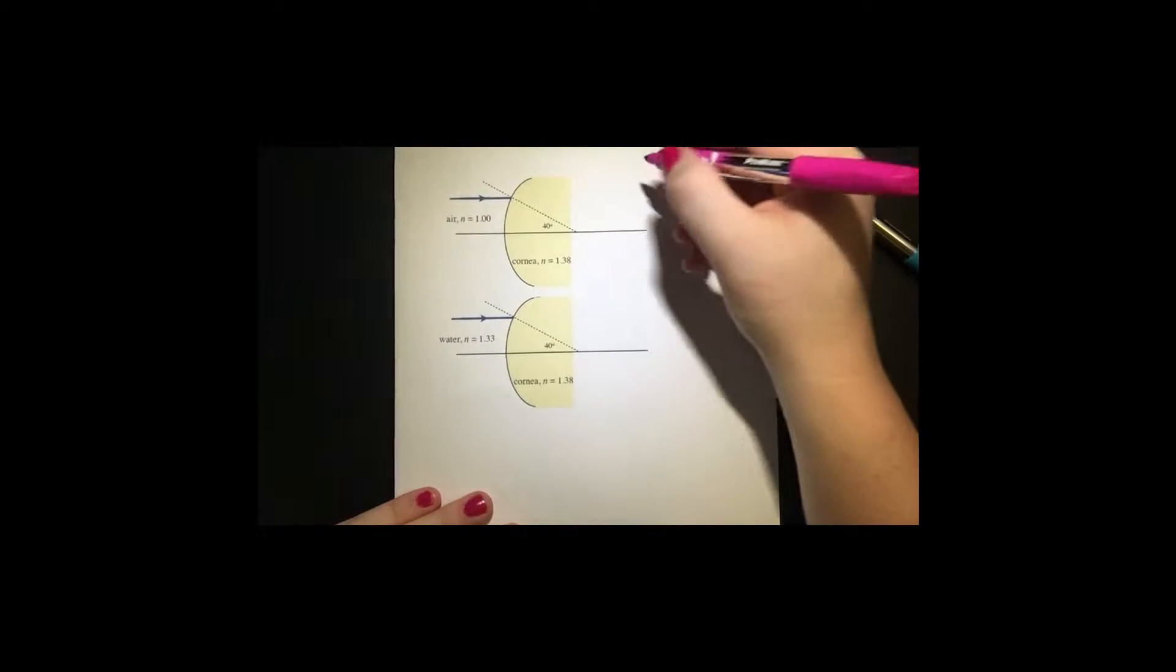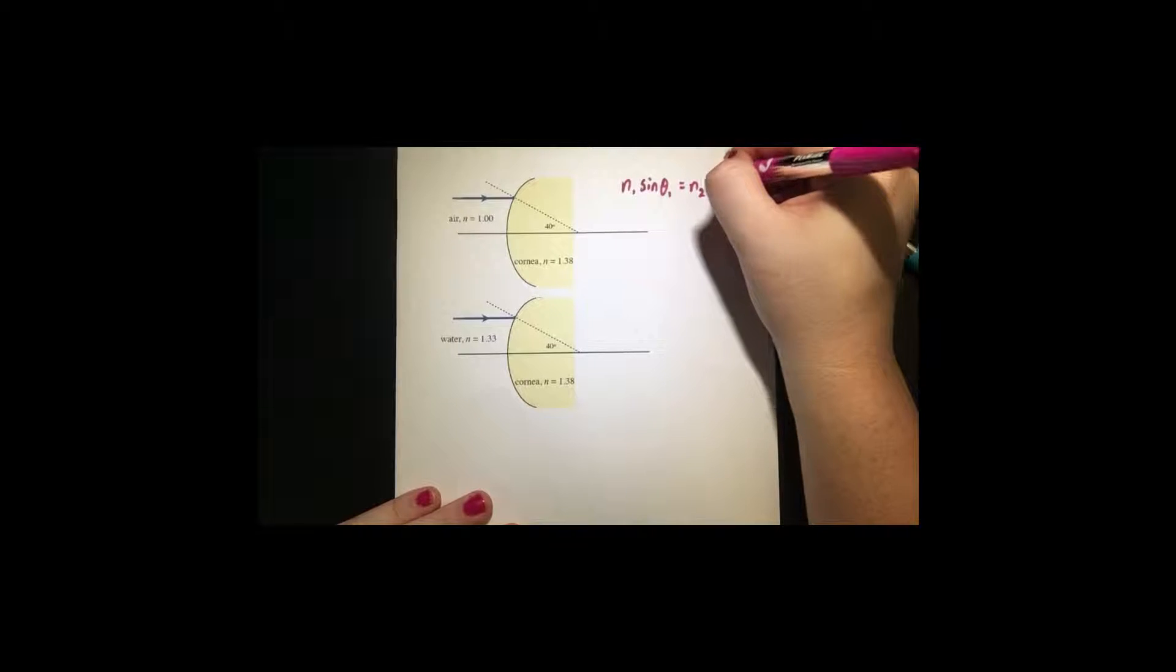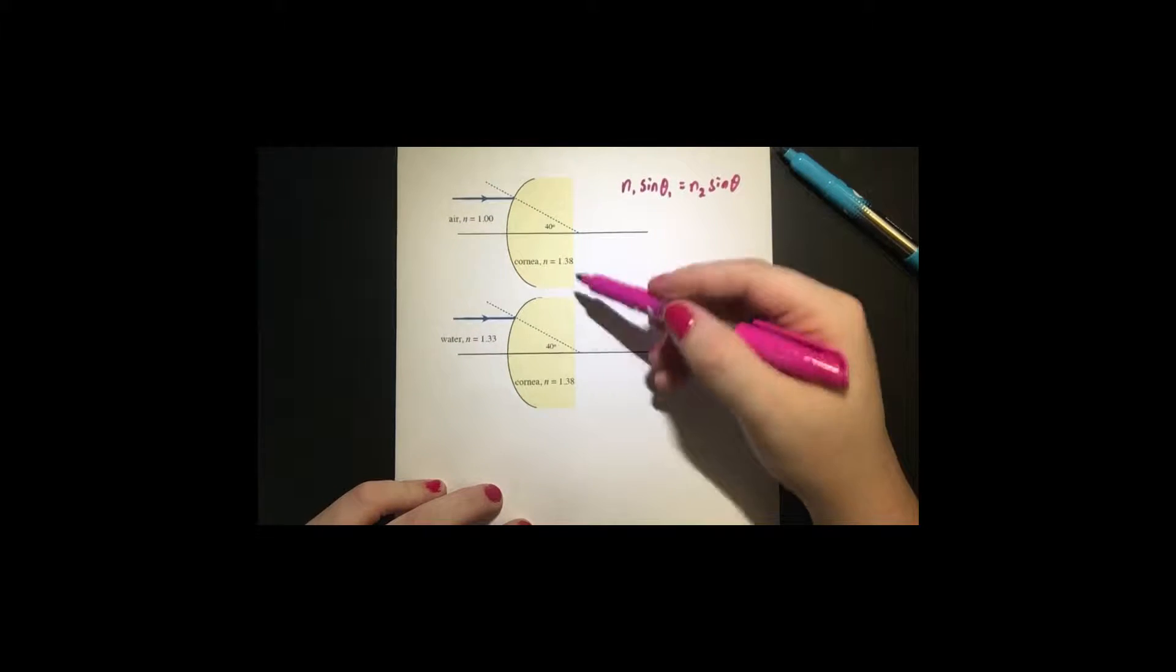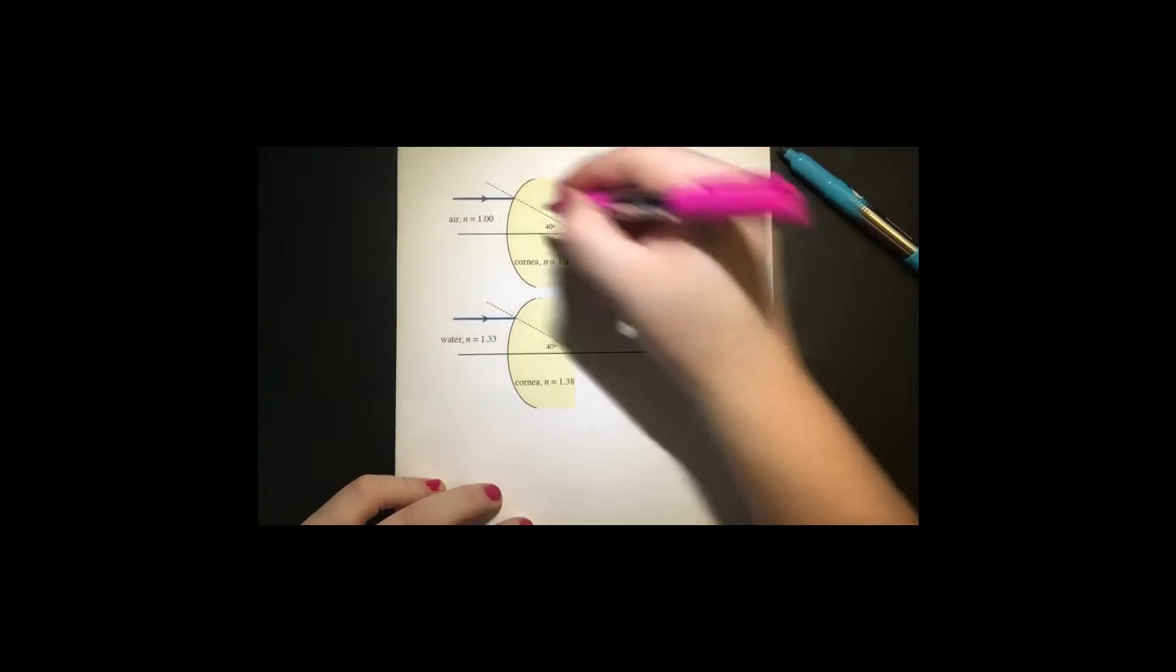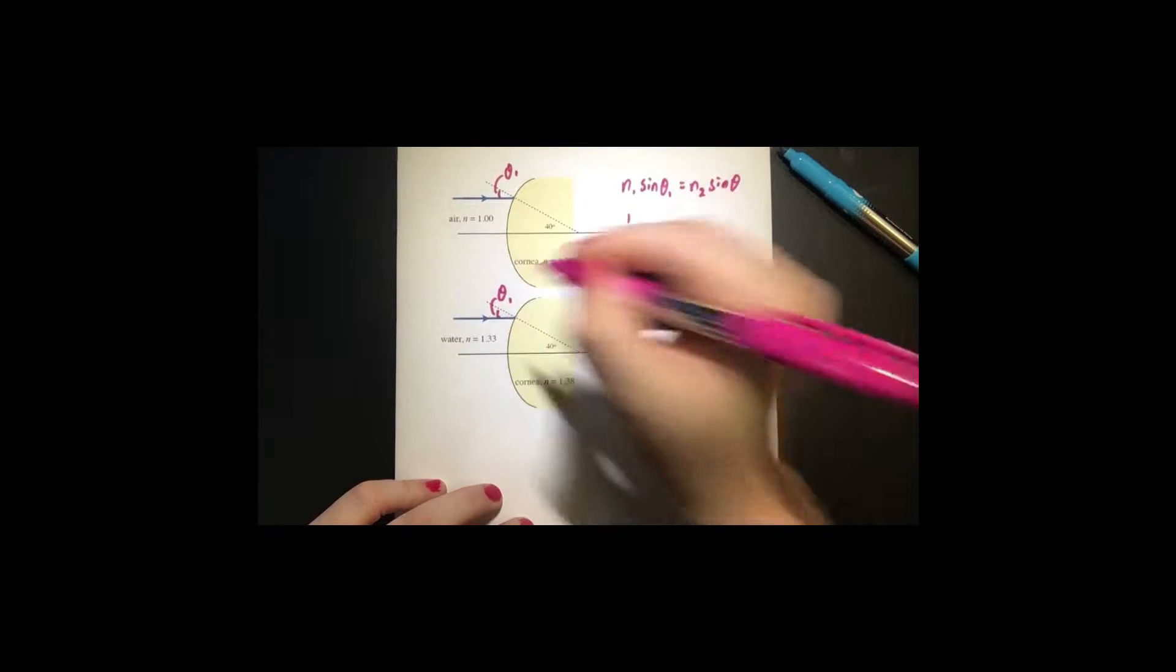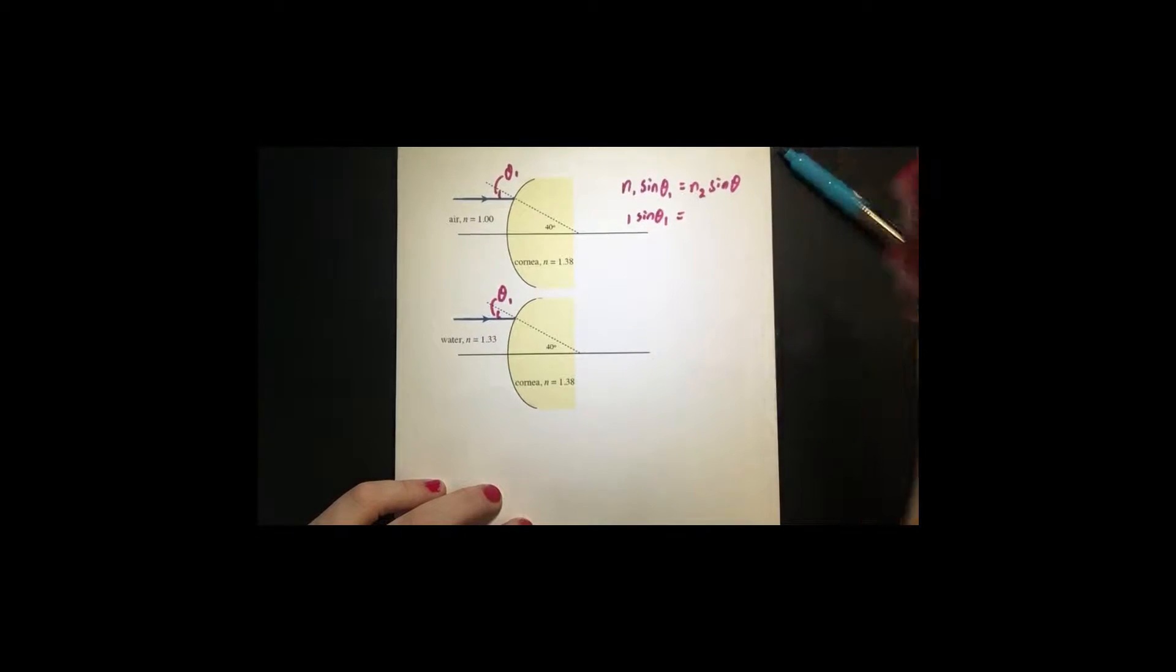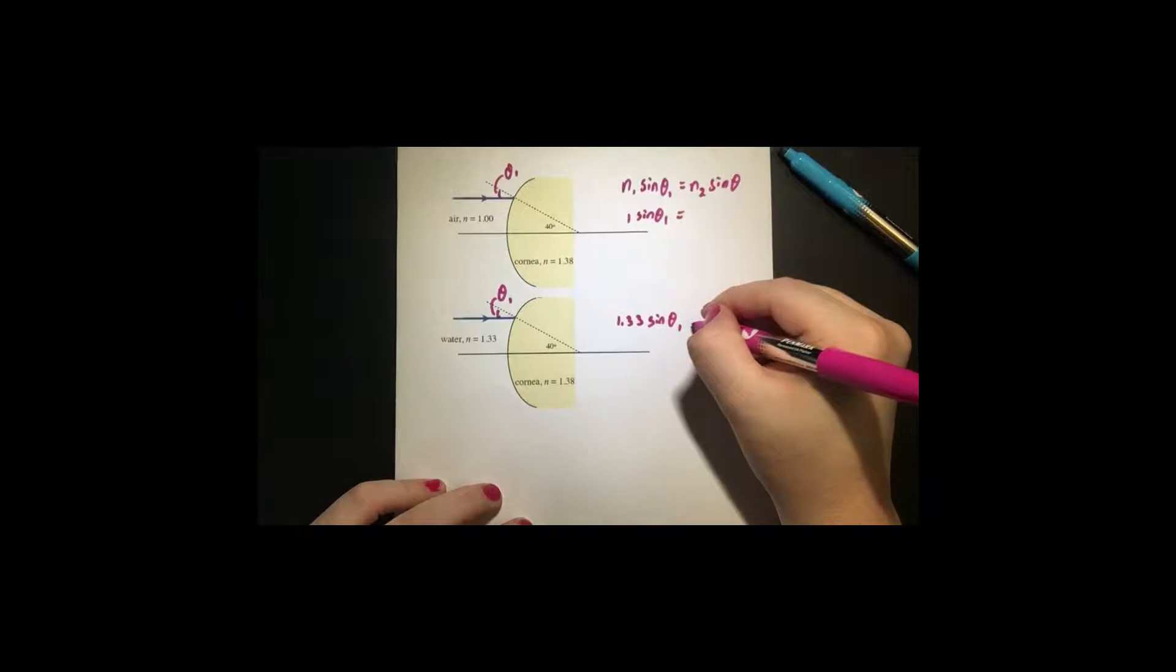let's recall Snell's law, n1 sine theta 1 equals n2 sine theta 2. We're given the indices of air and water and we're given the index of the cornea. So for here n of air is 1, we have sine theta 1 which is this angle right here. This is theta 1, this is also theta 1.